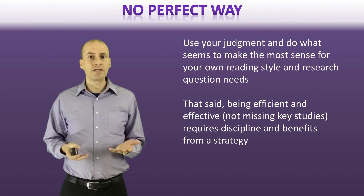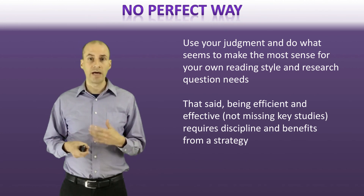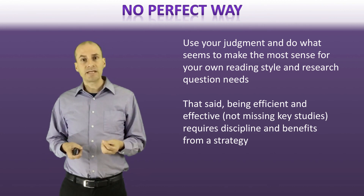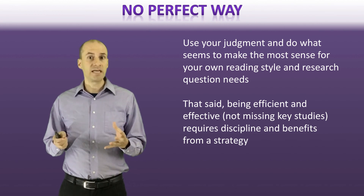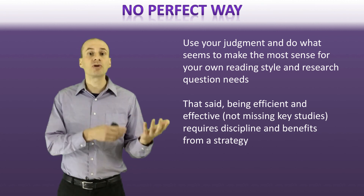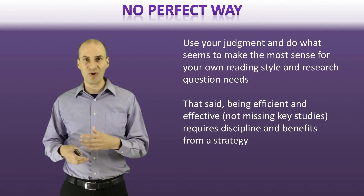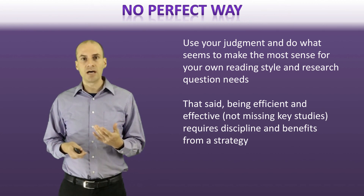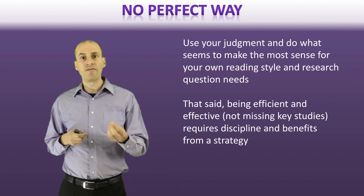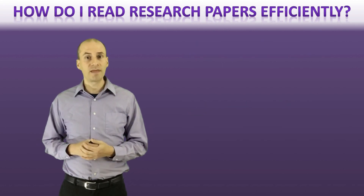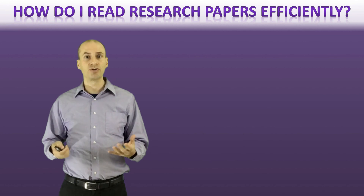There's no perfect way to read papers — you don't have to do it exactly as I've recommended. Use your own judgment and see what makes sense for your reading style and the questions you're doing. But you do need to think about how you can be efficient and effective while still not missing key studies. Regardless of how you do it, you need discipline so that you don't pick up your head two hours later without having accomplished anything, and you have a strategy that takes advantage of the structure of papers to find the information you need as fast as possible. I hope that was helpful — this is just my personal view on how to read papers efficiently and do literature reviews fast.